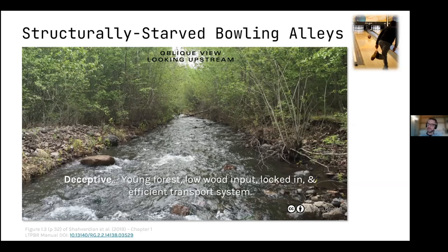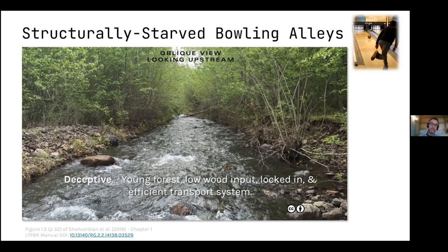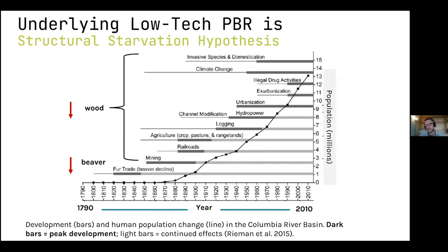We have a lot of riverscapes that look deceptively good to most people — there's some green vegetation along them, so it must be fine. But if you look closer, this riverscape is a product of a bulldozer. There was a big flood, a river behaving as it arguably should, and the response was to run the bulldozer down, put the channel in its place, and pile the spoils off to the side. Since then it's recovered with vegetation, so it looks okay — but it's a bowling alley: simplified, with very little habitat value and starved of structure like wood.